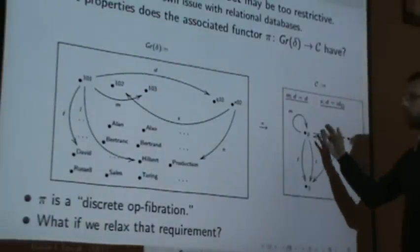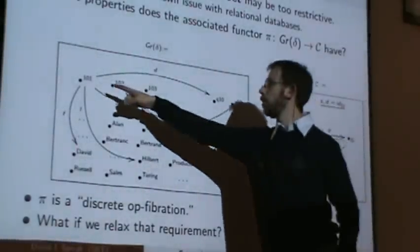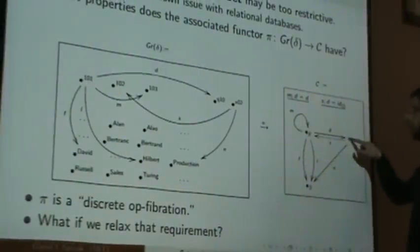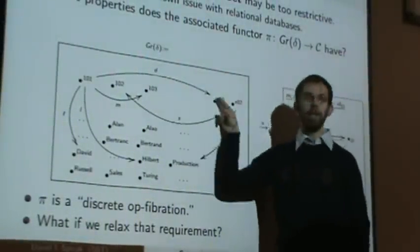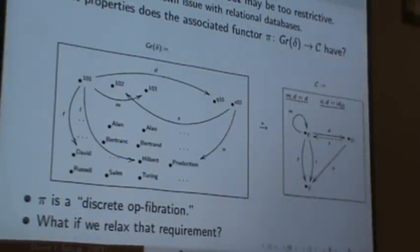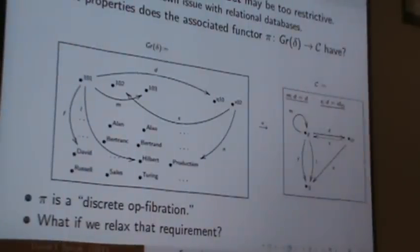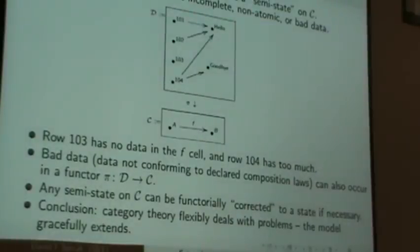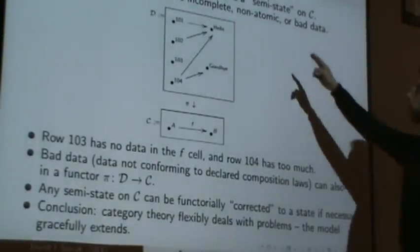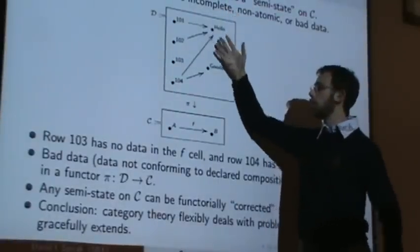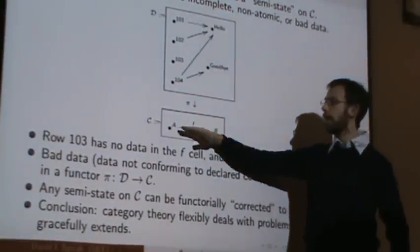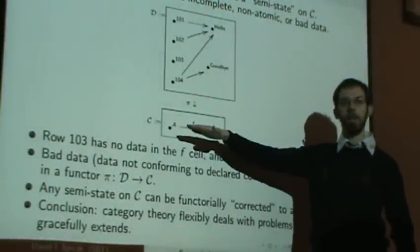So, what if we relax that requirement and say, oh, I have 102 here and I have D here, but I don't have an arrow D up here. Then you've all of a sudden allowed for this kind of semi-structured data. So, any old functor in the world, from any category to any other category, can be thought of as data on C, but semi-structured data.